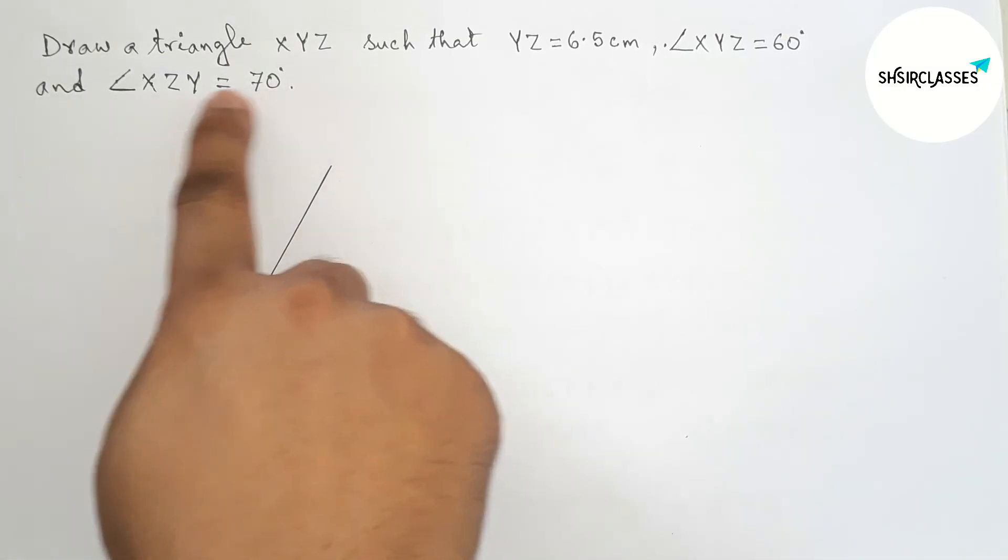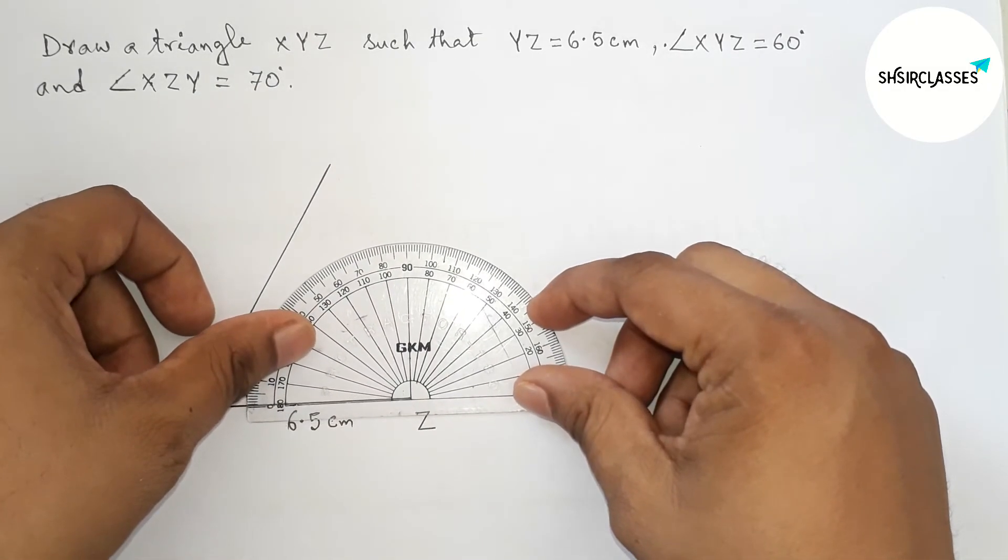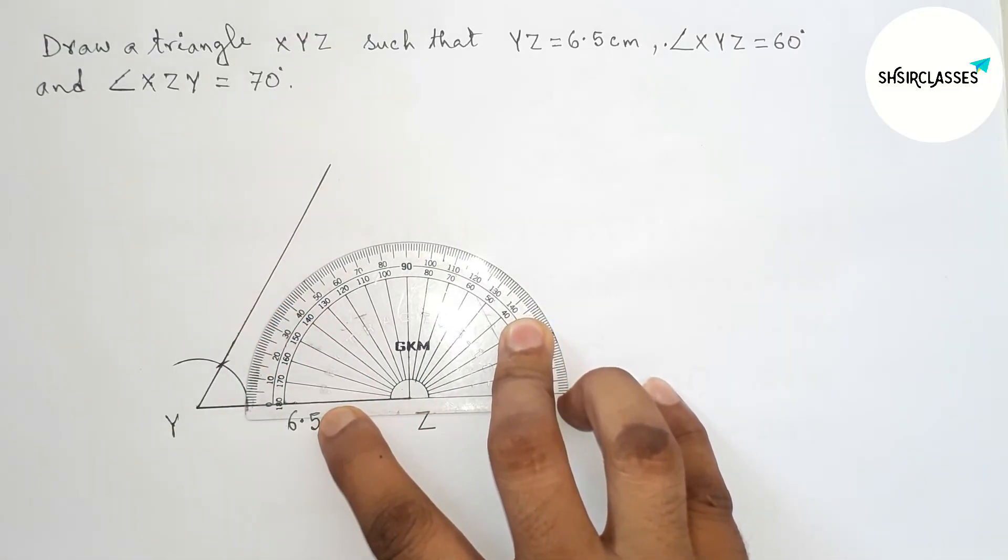So here this is perfectly a 60 degree angle. Next, drawing 70 degree angle on the point Z with the help of protractor.